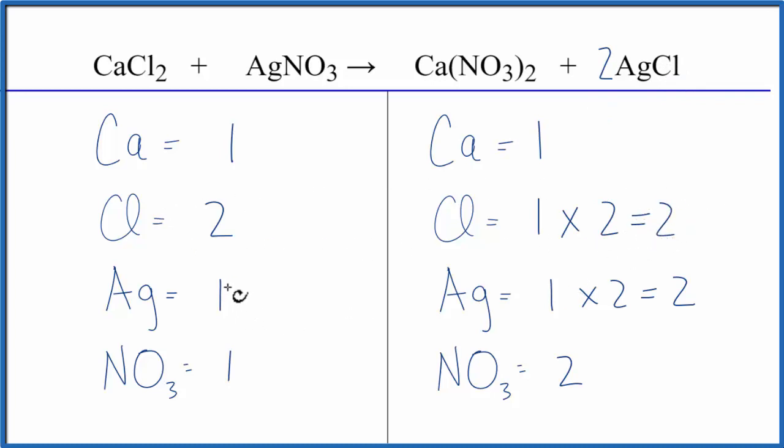Now it looks like we just need to double the Ag to give two, double the nitrate to get two there, so a coefficient of two in front of the AgNO3. One times two, that would give me the two silvers, those are balanced. Nitrates, one nitrate times two, that gives me two nitrates, and those are balanced, and we're done.